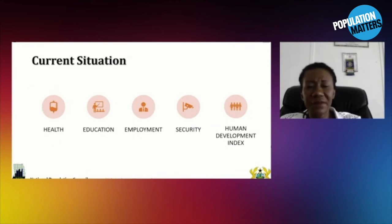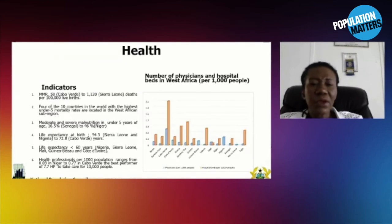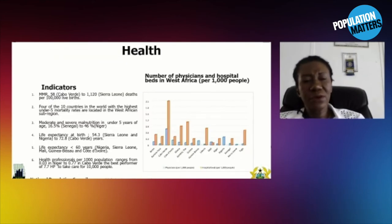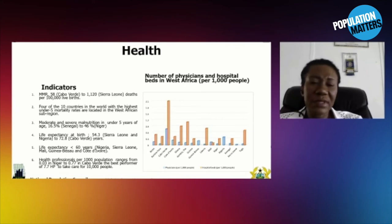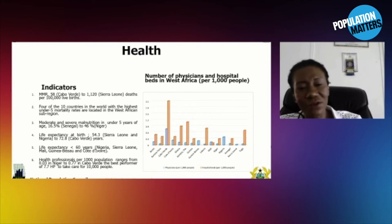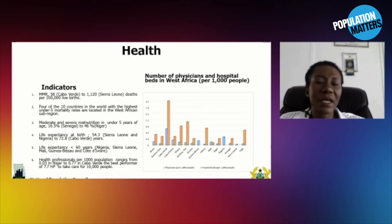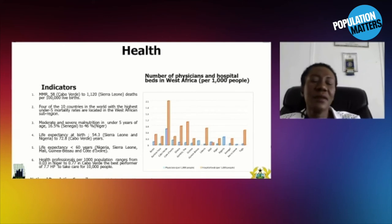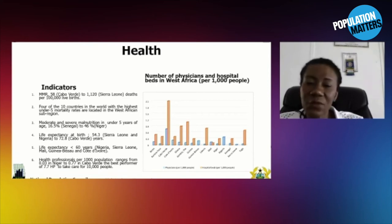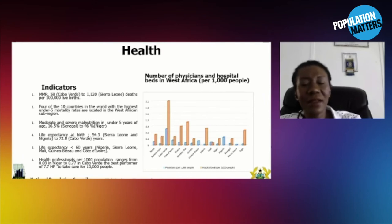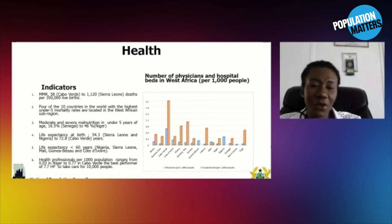In terms of health, education, employment, and security — health is a prerequisite to education, and it is also a prerequisite to quality employment, because when you are not healthy, it's difficult to learn. And if you do not learn, it's difficult to get a good job in the 21st century where knowledge is the currency. We have high maternal mortality because we have high teenage pregnancy, high unmet need for family planning, and high child marriage. Four out of ten countries in the world with the highest under-five mortality rates are located in West Africa, because you also have the highest child marriages and high teenage pregnancies in those countries.